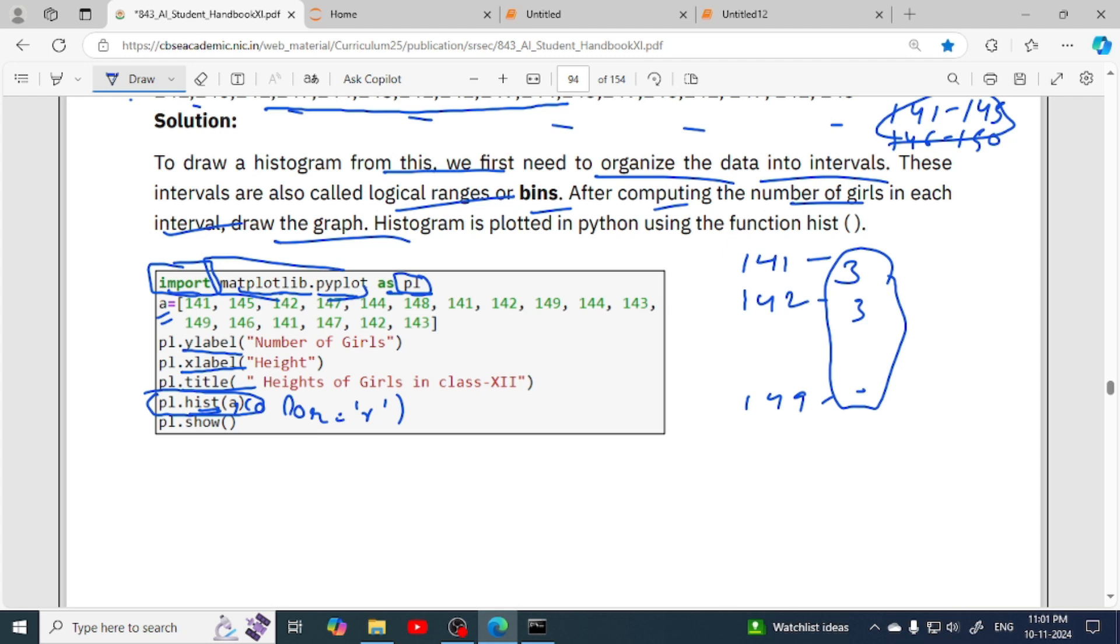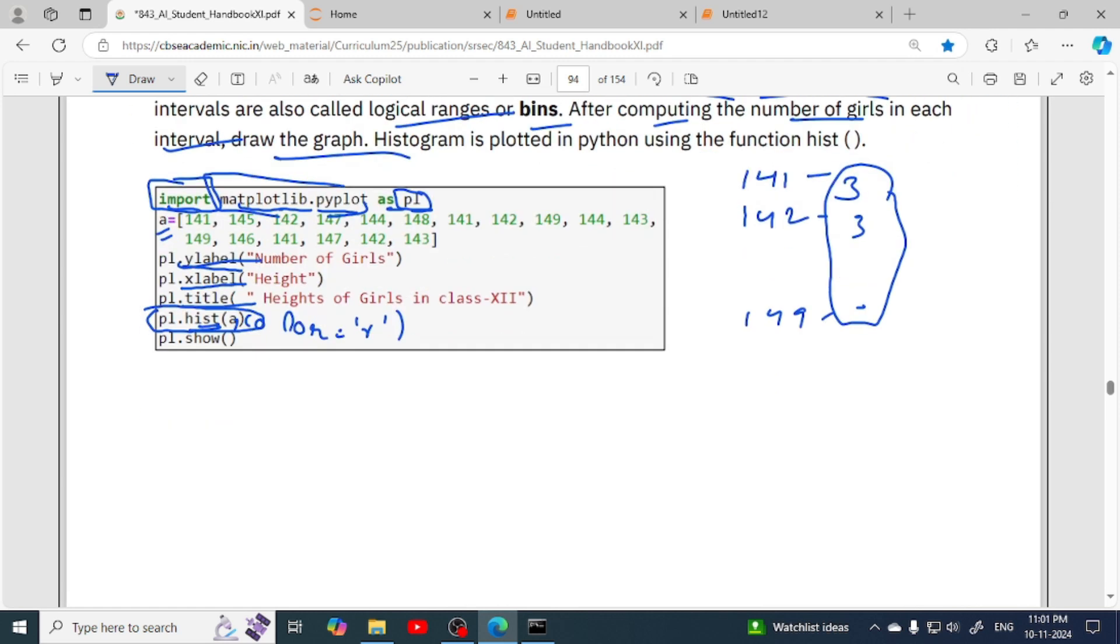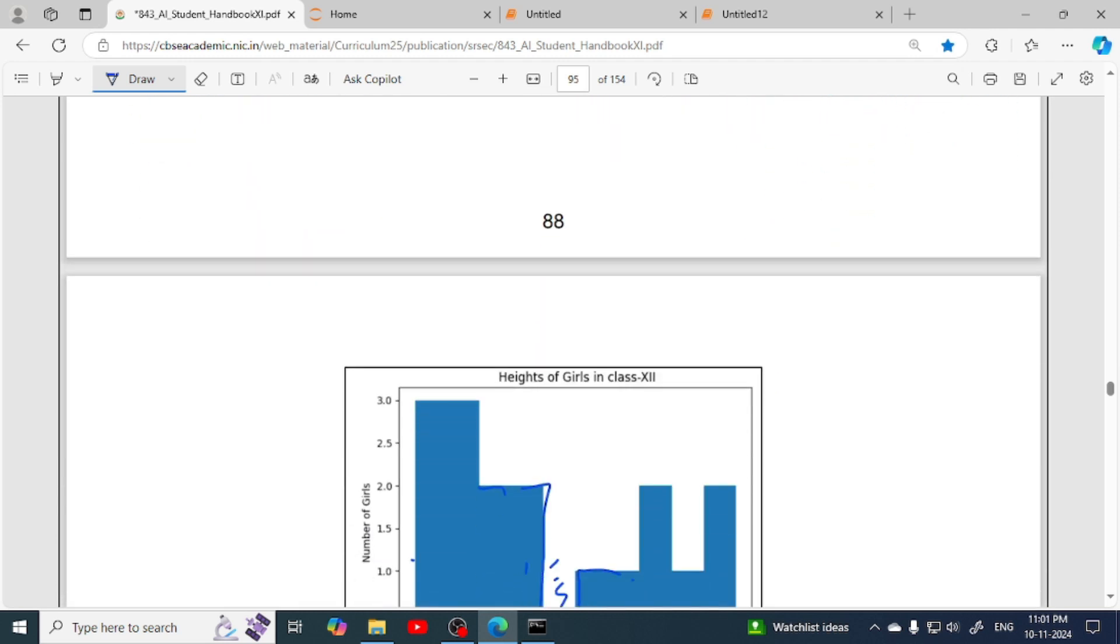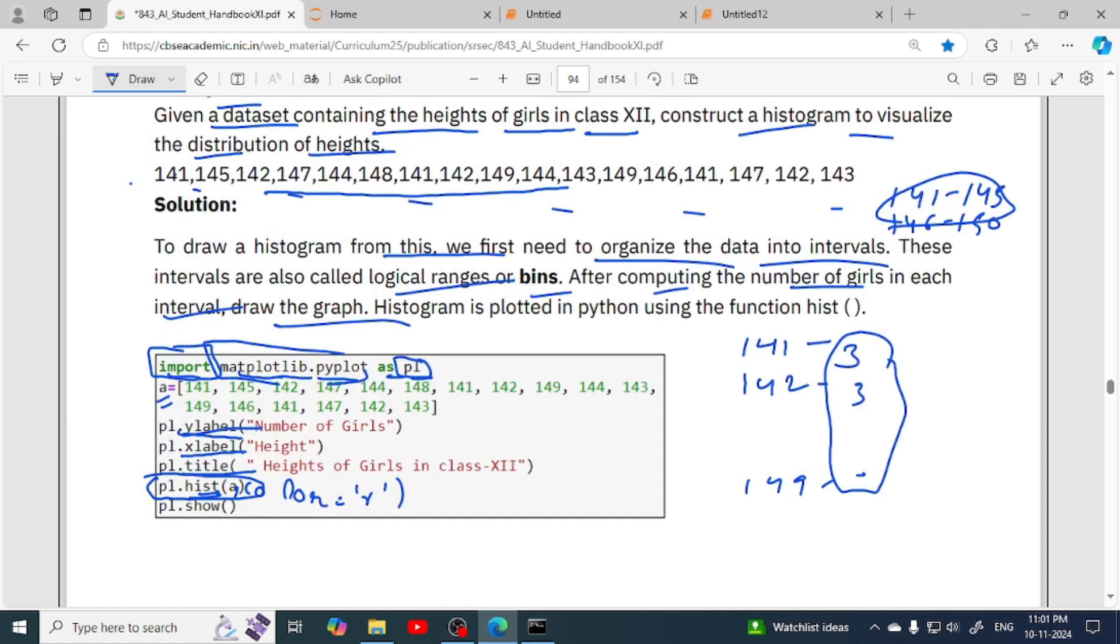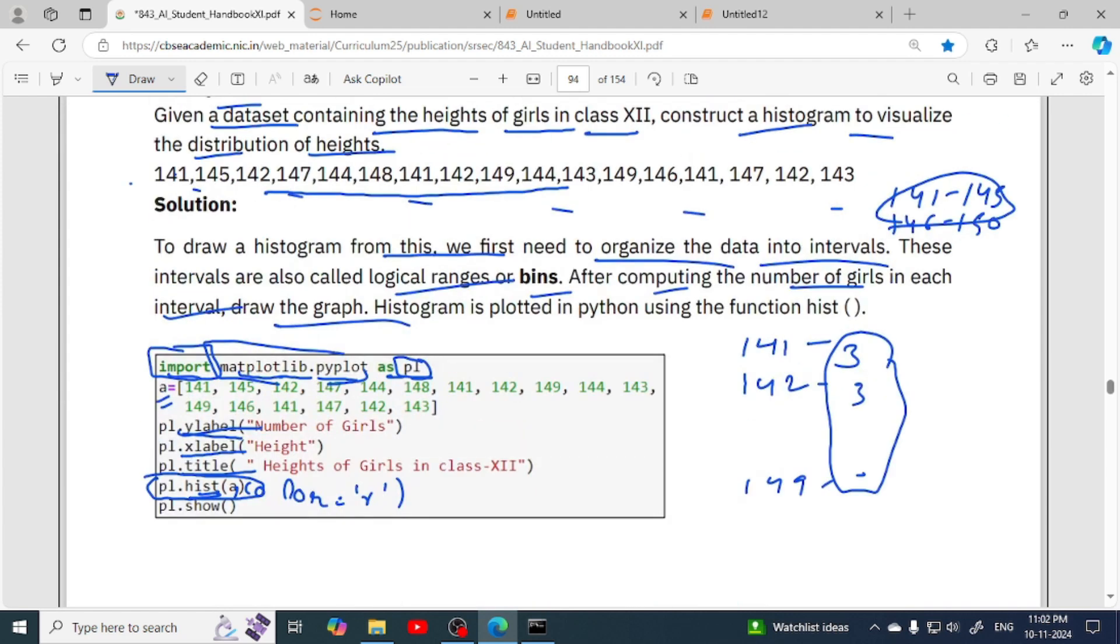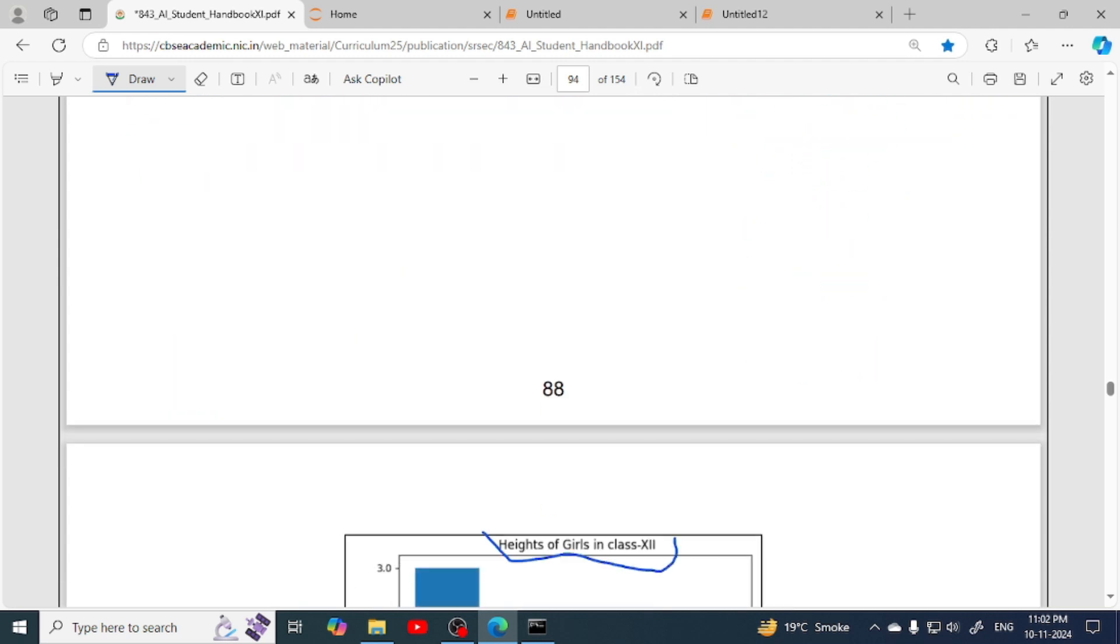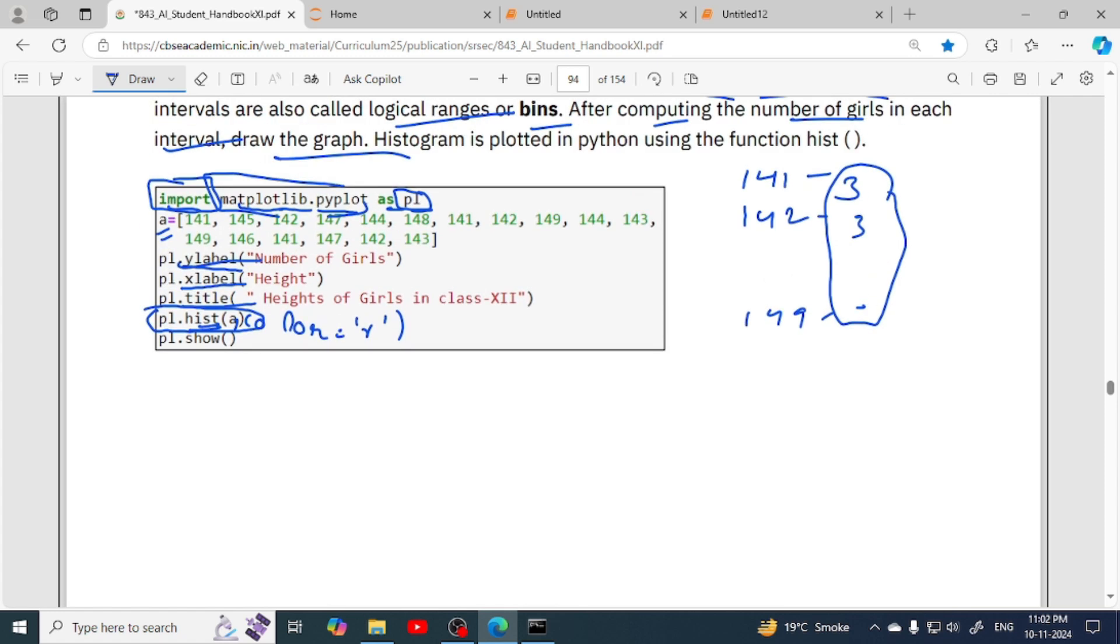Y label function is used for giving the label to the y-axis. We will write x label function, and then whatever text you want to set. Title function is used for chart title - if you want to give title to your chart, you can use the title function and pass the title as an argument inside quotes. After doing all these things, you have to write pl.show - whatever alias name is there, through that you call the show method for displaying your graph.